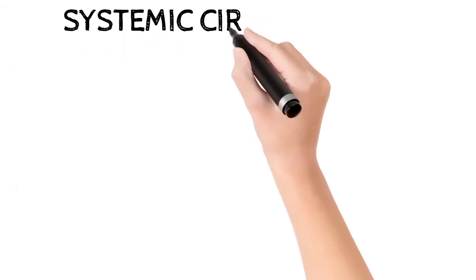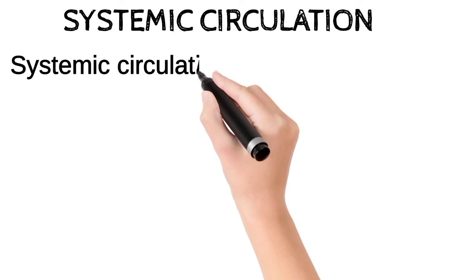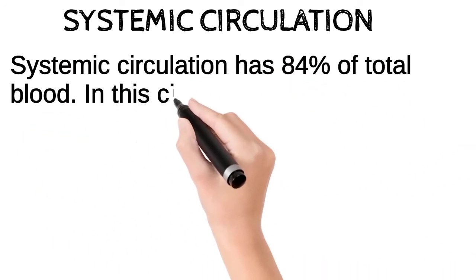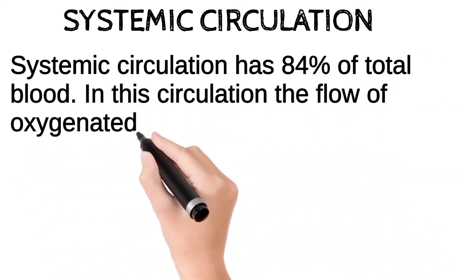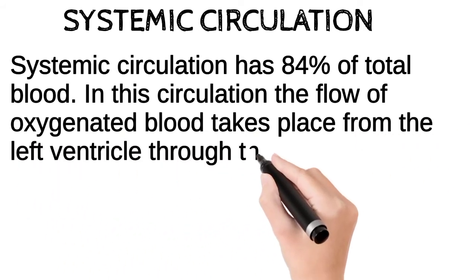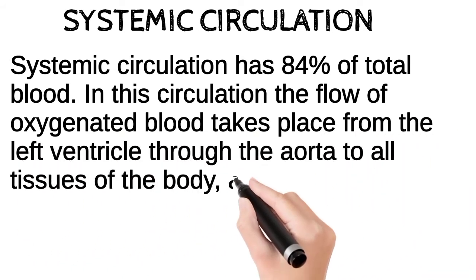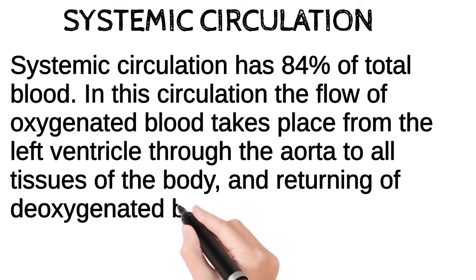Systemic circulation. Systemic circulation has 84% of total blood. In this circulation the flow of oxygenated blood takes place from the left ventricle through the aorta to all tissues of the body, and returning of deoxygenated blood takes place.